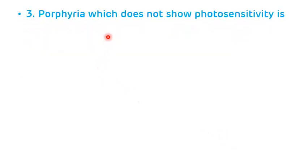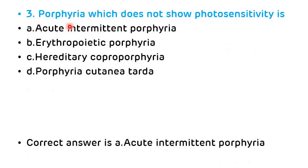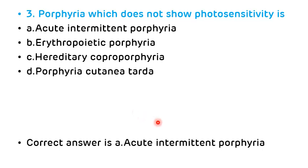Third MCQ: Which porphyria does not show photosensitivity? Options: acute intermittent porphyria, erythropoietic porphyria, hereditary coproporphyria, porphyria cutanea tarda. The answer is acute intermittent porphyria, which is associated with abdominal pain and neuropsychiatric symptoms due to accumulation of ALA and PBG — not photosensitivity.